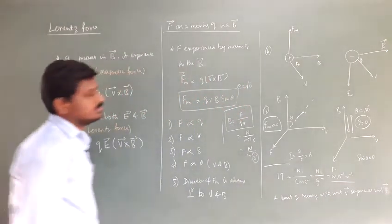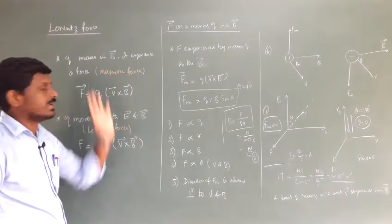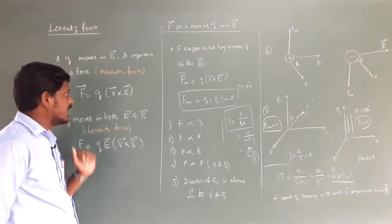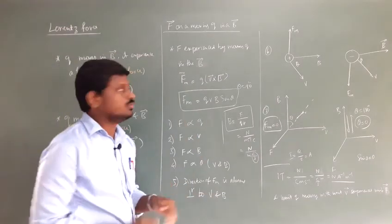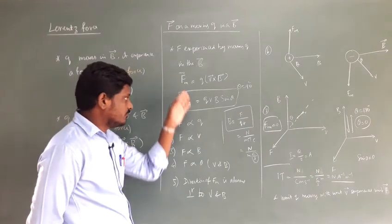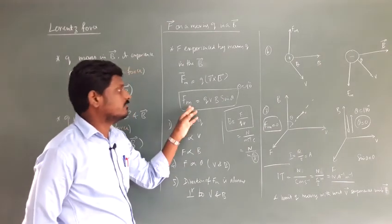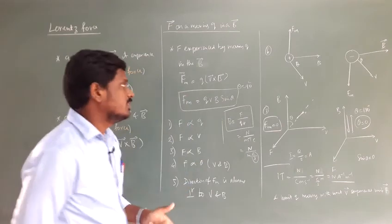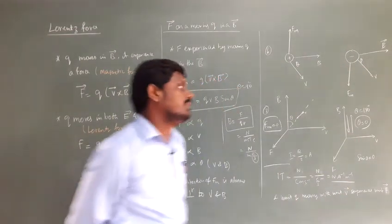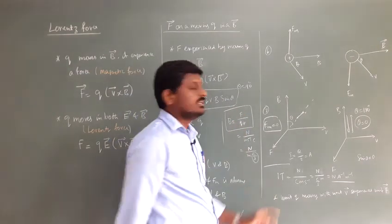In summary, we discussed the Lorentz force: a charge moving in a magnetic field produces a magnetic force; in both electric and magnetic fields, F = q(E + v × B). The velocity, magnetic field, and force are all mutually perpendicular (θ = 90°). For a positive charge the force is upwards; for a negative charge it is downwards. If a charge moves parallel or anti-parallel to the field, θ = 0° or 180° and the magnetic force is zero. Finally, 1 tesla = N·A⁻¹·m⁻¹, and its definition follows directly from the formula B = F/(qv).